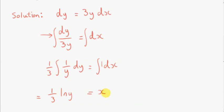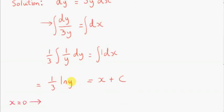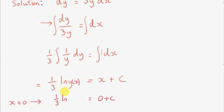We're integrating 1 with respect to x — that's just going to give us x. I'll call the arbitrary constant c. We want our function y to have the property that y at x equals 0 is 1. So one third ln of y at 0: put 0 in for x, giving 0 plus c. Y of 0 is just 1. When x is 0, we want y to equal 1 — it's the boundary condition we're given.